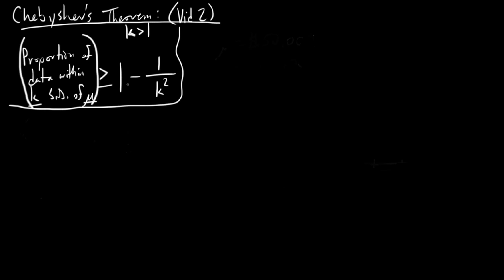In several cases you might have a data set that might not be normally distributed, and therefore we can't necessarily use our standard normal distribution to find what percentage of the population would lie within however many standard deviations of the mean. So what we need to do instead is rely upon Chebyshev's Theorem, which is actually valid for any distribution. We could use Chebyshev's Theorem to help us find that out.